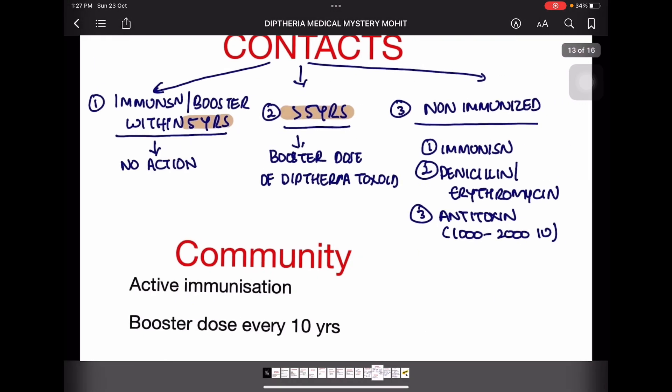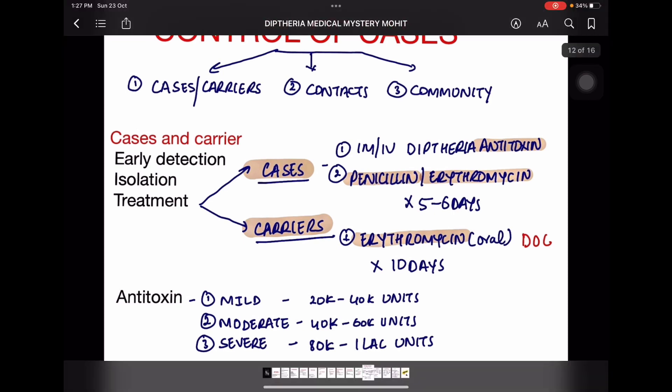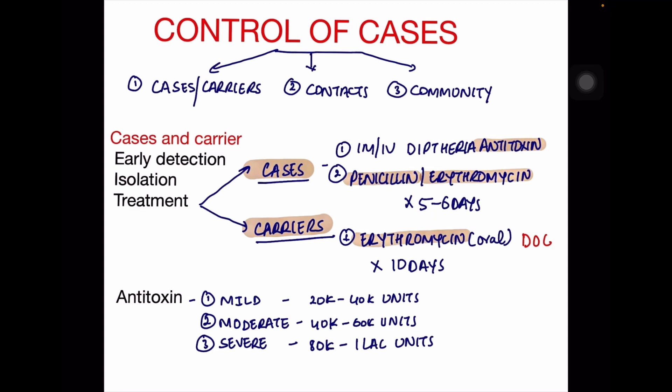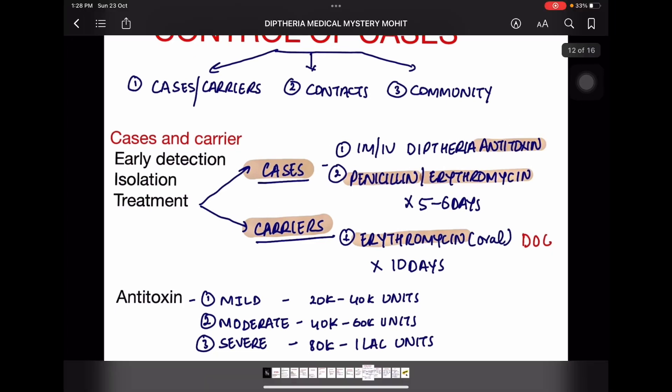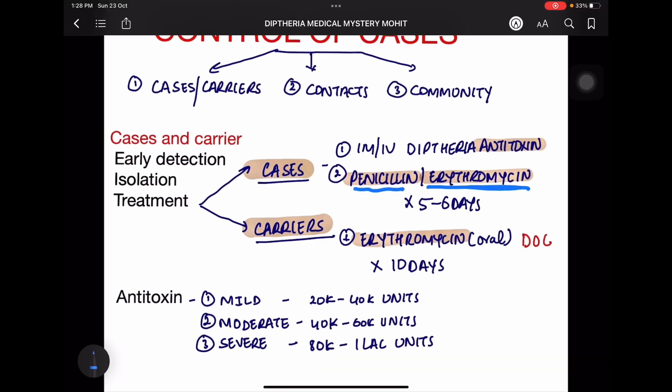Control of cases is divided into: control of cases and carriers, control of contacts, and control in the community. For cases and carriers, we need early detection, isolation, and treatment. For cases, intramuscular or intravenous diphtheria antitoxin is given along with penicillin or erythromycin for five to six days as prophylactic treatment.